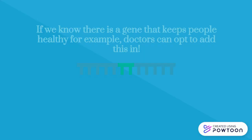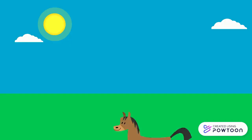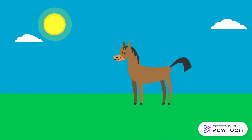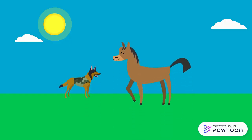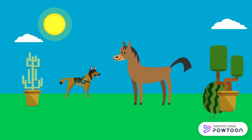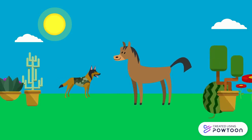CRISPR can be used outside of human use as well. It can be used in animals to make them healthier and less damaging to the environment. It can also be used in crops, for example, to help increase yield and therefore feed more people.